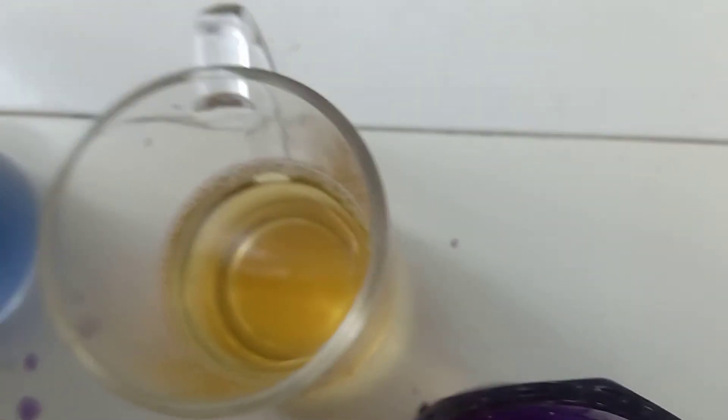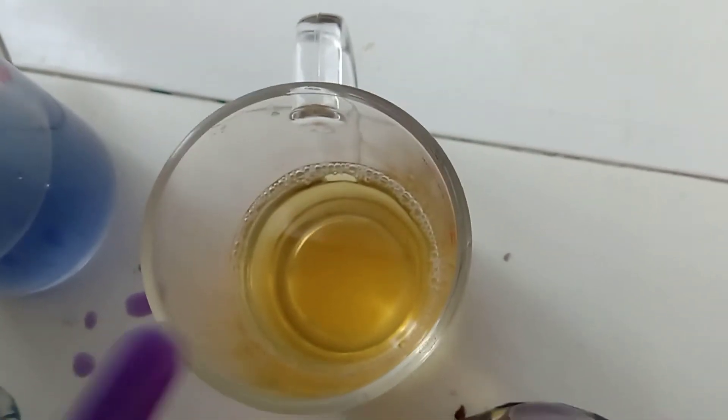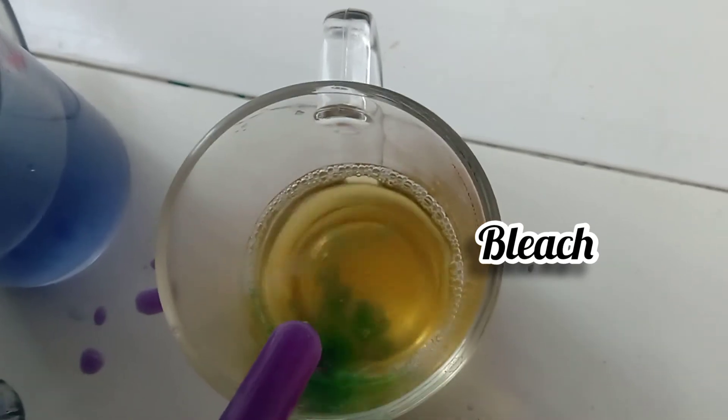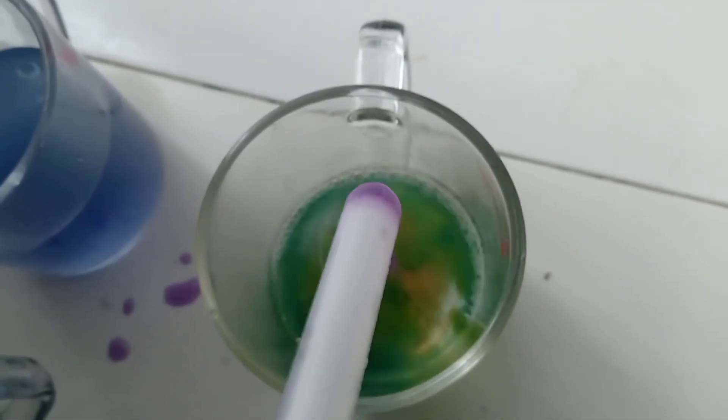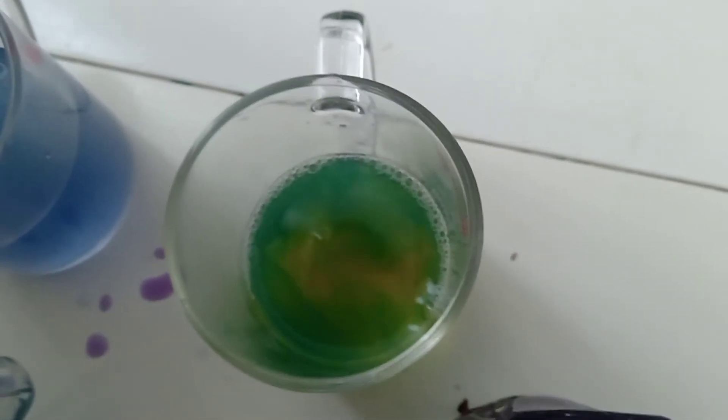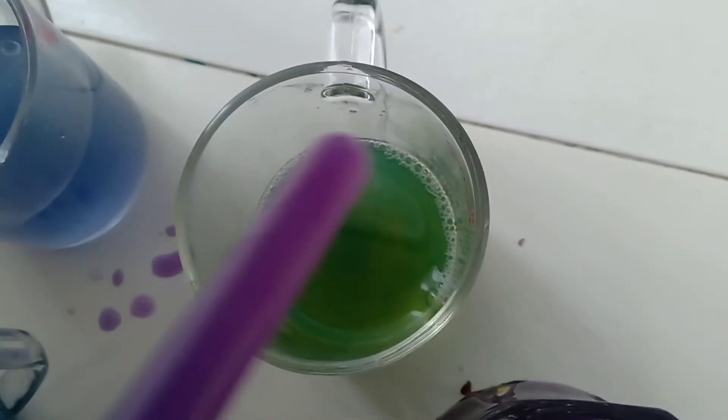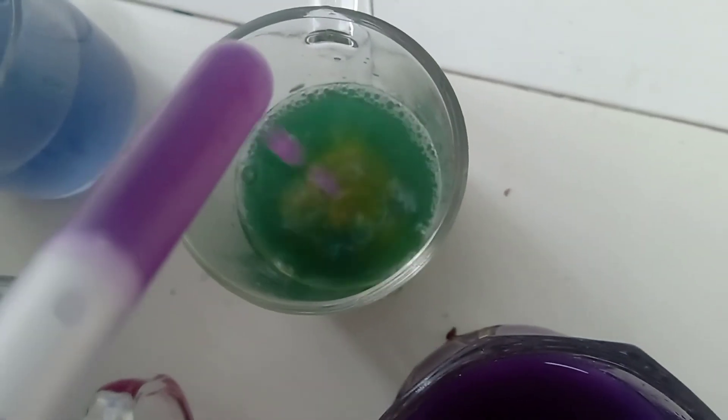And the last one, bleach. For the bleach, now see the new color, the green color. Bleach makes green color. We have put in the bleach and it became green.